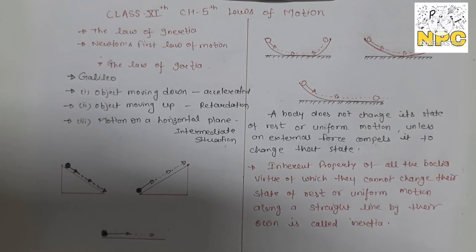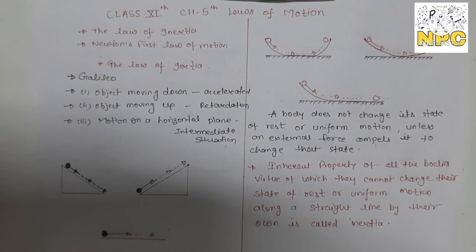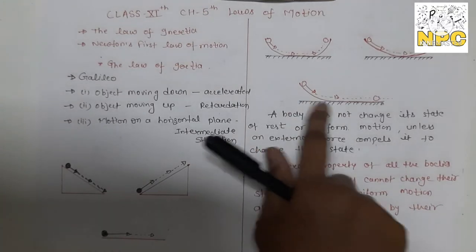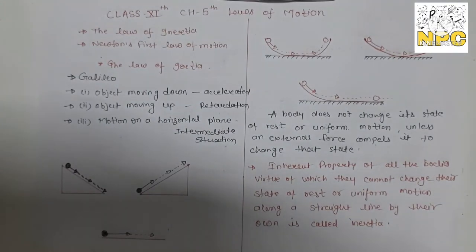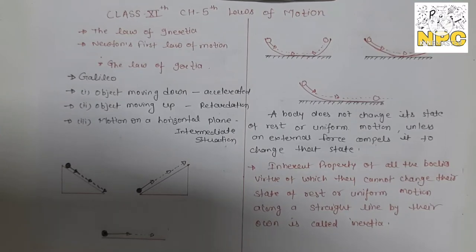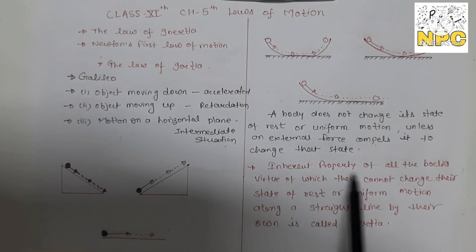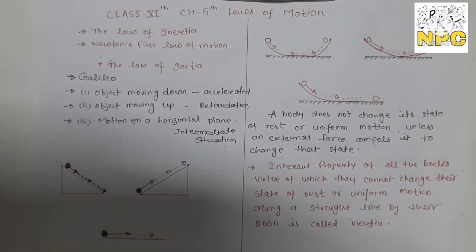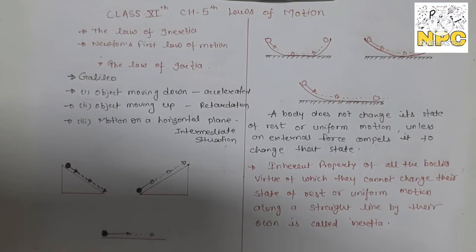From both cases we see that if the ball is in motion, it remains in motion, and if the ball is at rest, it remains at rest. The body has an inherent property that resists any change in its state. This inherent property is called inertia. The statement of inertia is that it is an inherent property of all bodies, by virtue of which they cannot change their state of rest or uniform motion along a straight line on their own.